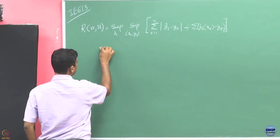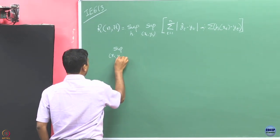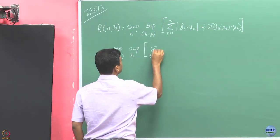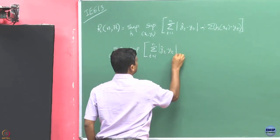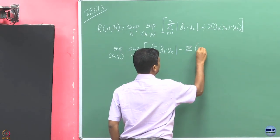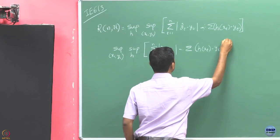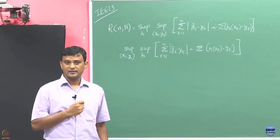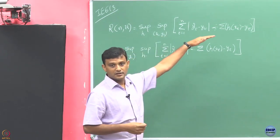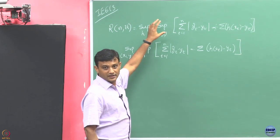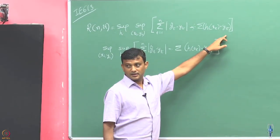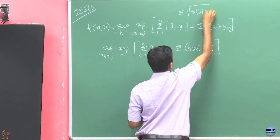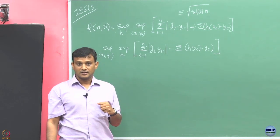Now, suppose if I had defined regret differently — would my earlier bounds still continue to hold? Yes, because when I give the bound, whatever h you took and whatever sequence you took, I was able to bound that quantity. The bounds were of the form 2 to the power of cardinality of H times something, which was independent of the specific hypothesis and sequence.